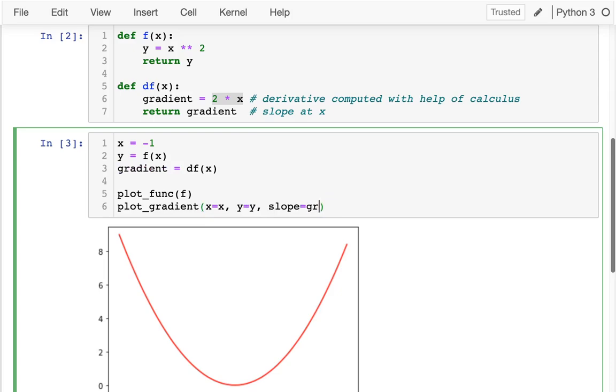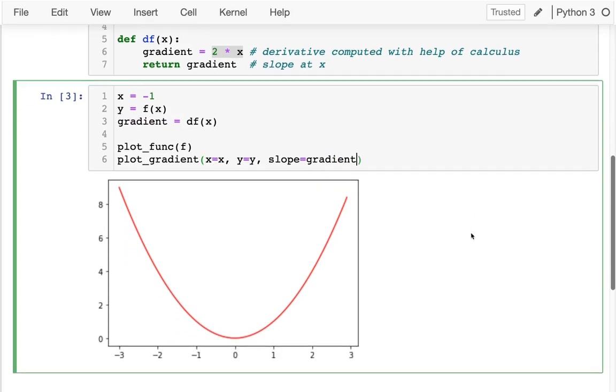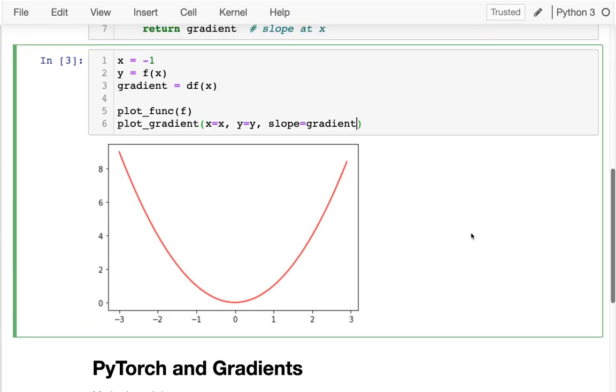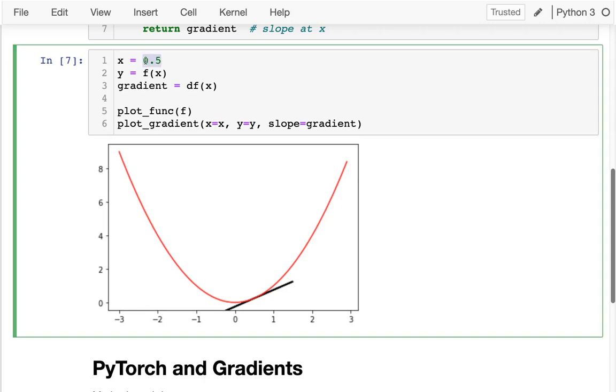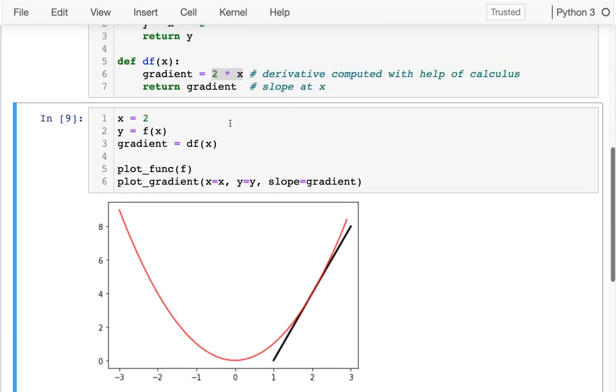And so I can do that and I can see that I can really be representing these gradients or slopes at a particular point by these short little tangent lines. And so maybe I'm just trying to plot this a few times and sure enough, this function is correctly, the derivative function is correctly computing things.